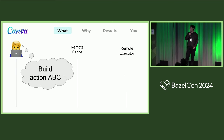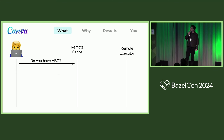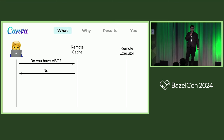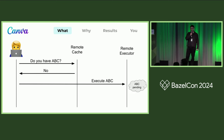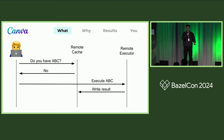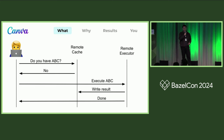First, let's see what happens when a user tries to build an action remotely. They send a request to the remote cache asking if there's a result already. In this case, the action hasn't been run before, so there isn't. As a result, they send an execute request to the remote executor. The action runs for a little bit, the result is written to the remote cache, and then the build is finished.